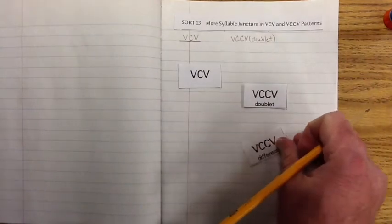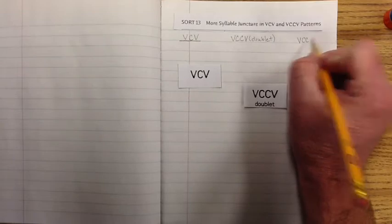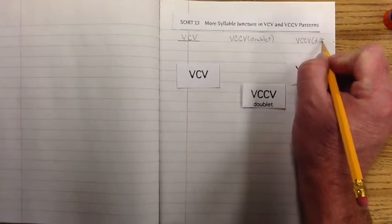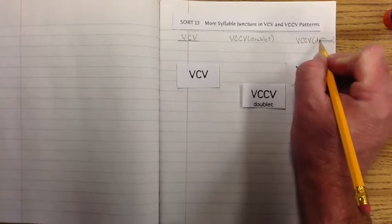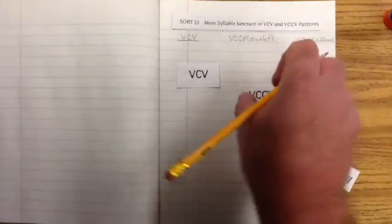And then our next one is vowel-consonant-consonant-vowel. And this is different. It's barely going to fit. There we go. So now that we've got those written, we can move them off to the side, get them out of the way.